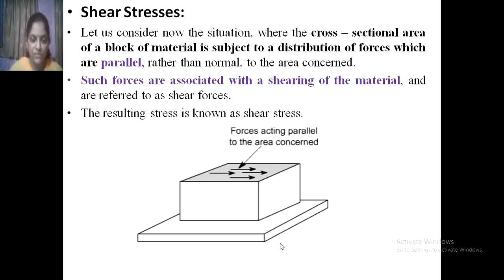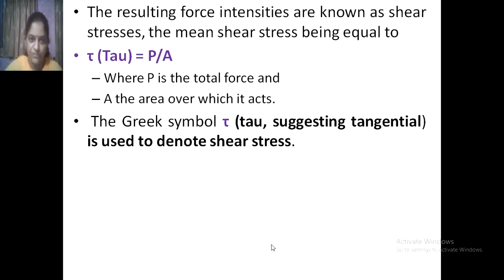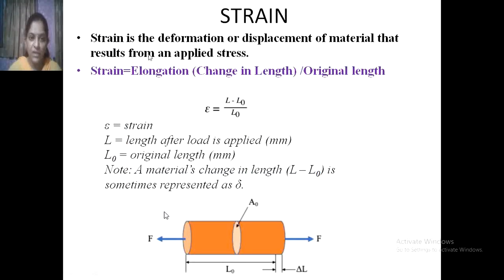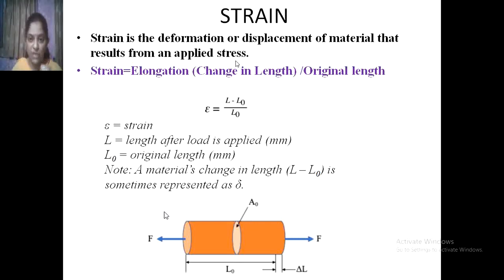Bearing stress and shear stress involve force acting parallel to the area of concern; shear stress (τ) equals force divided by area. Types of stress include compression, tension, shear, torsion, and bending. Strain is the deformation or displacement of material that results from an applied stress. Strain equals elongation (change in length) divided by original length.